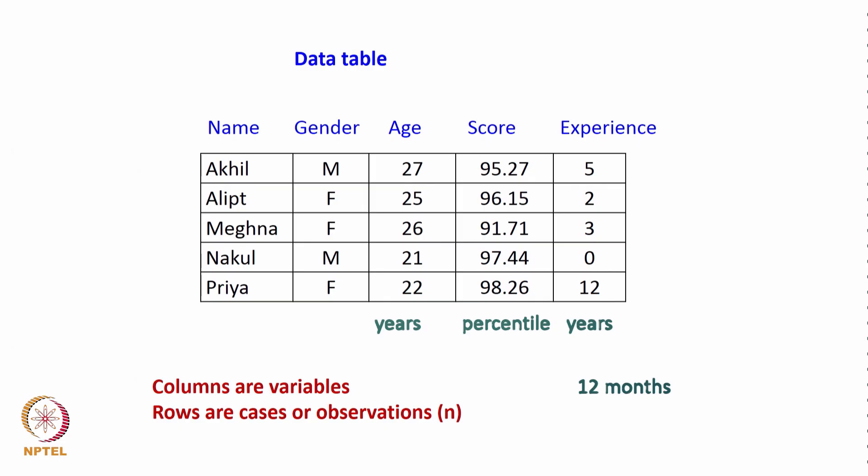Once we make a table like this, the columns are called variables — such as name, gender, age, score, and experience — and the rows are called cases or observations. So the general terminology: columns are called variables, rows are called cases or observations. Looking at this, columns 1 and 2 represent data that are not numbers, whereas columns 3, 4, and 5 represent data that are numbers. Sometimes it is customary to represent gender as 1 and 0, but generally columns 1 and 2 are non-numerical while 3, 4, and 5 are numerical.